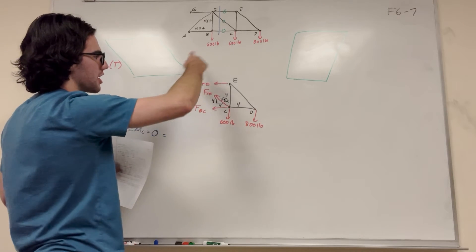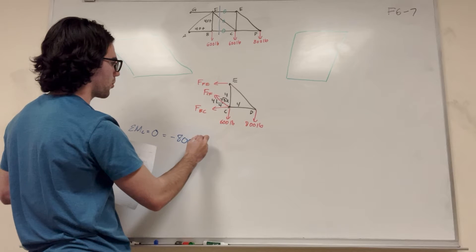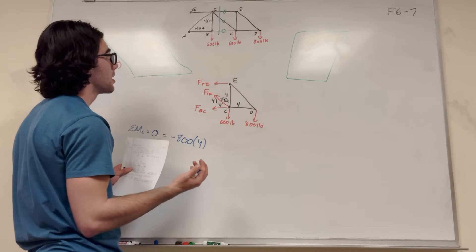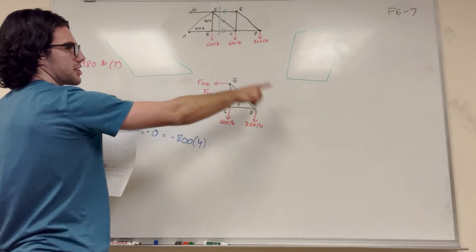So we know that this pushes 800 down, and it's going clockwise, right? So that's going to be a minus 800 times the distance of 4. We know that that's 4 feet.